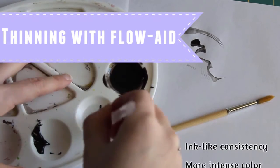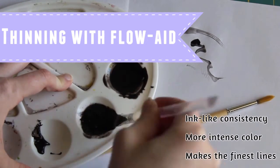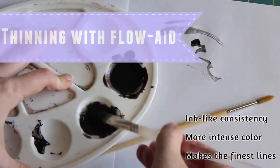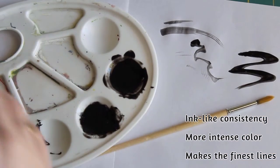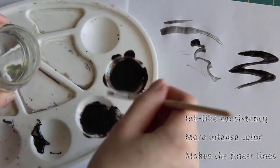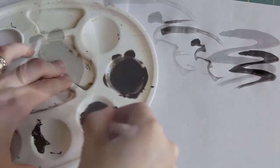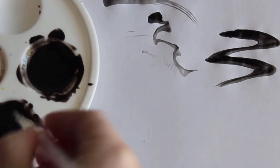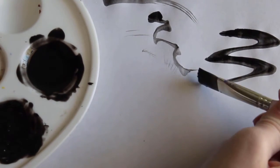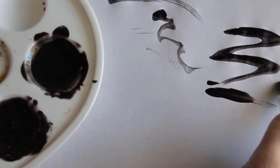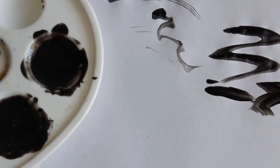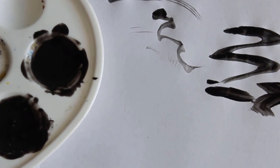Next up is our Flow-Aid mixed with water. Flow-Aid is best for several reasons. For one, it doesn't reduce the opacity as much. It also slows drying time so it's easier to clean up mistakes, and it reduces surface tension making lines even finer than with water.